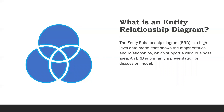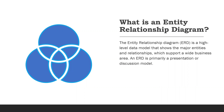What is an Entity Relationship Diagram? The Entity Relationship Diagram is a high-level data model that shows the major entities and relationships which support a wide business area. An ERD is primarily a presentation or discussion model, also known as an ER diagram or ER model, and is a type of structural diagram used in database design. An ERD contains different symbols and connectors that visualize the major entities within the system scope and the interrelationships among these entities.